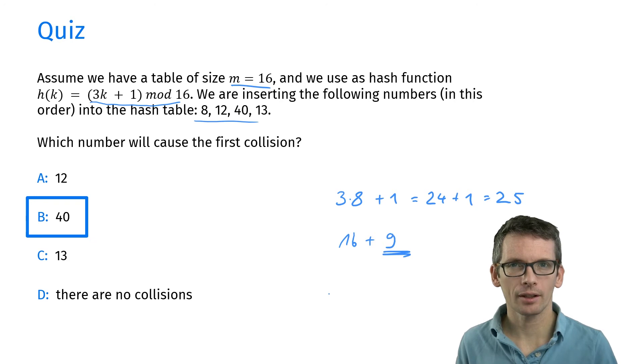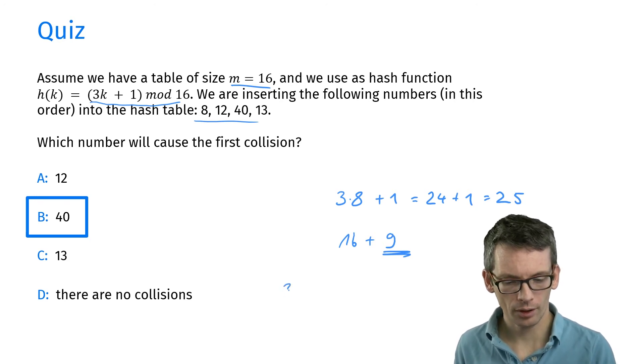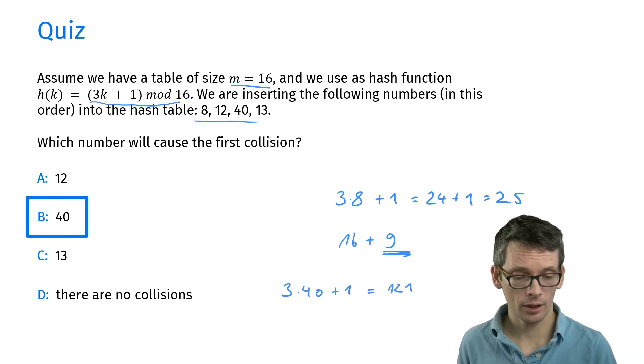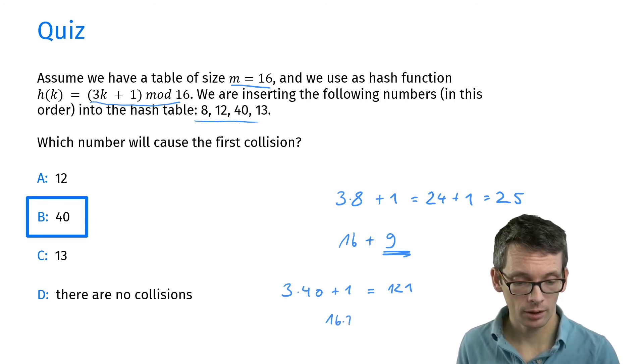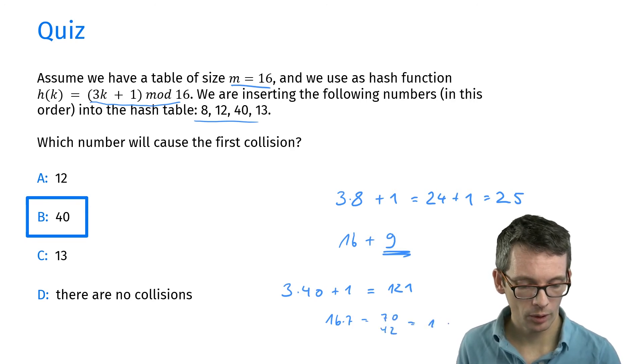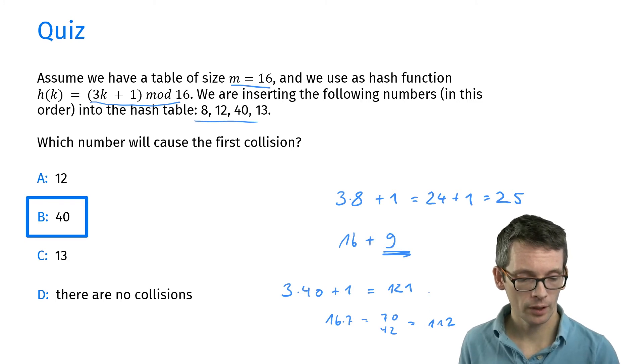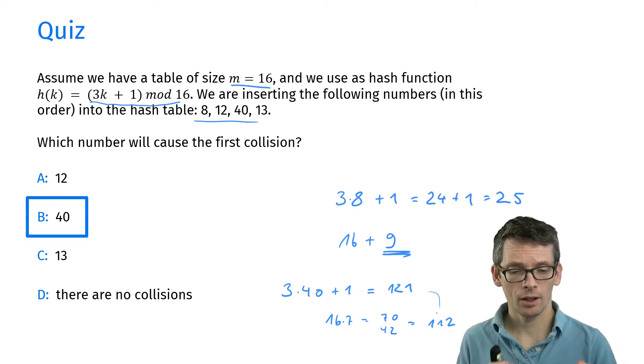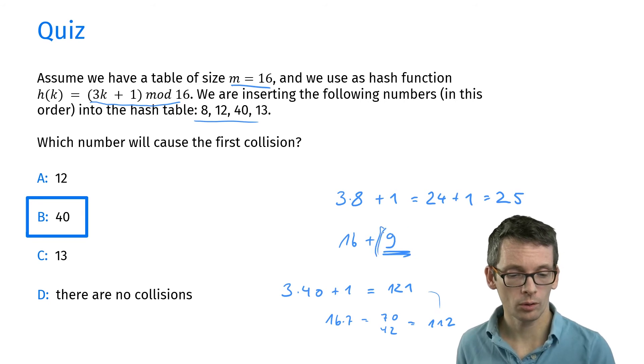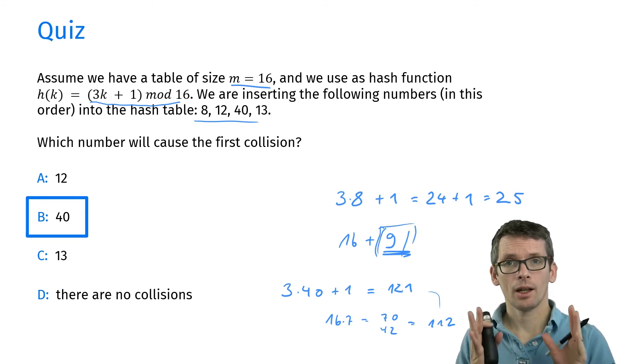The correct answer is B, 40. Because 40—let's do that—3 times 40 plus 1, that's 121. So now how often does 16 fit? 16 times... 121 modulo 16 is the difference of those two, which is 9. So that also wants to go to position 9, and that's our collision.